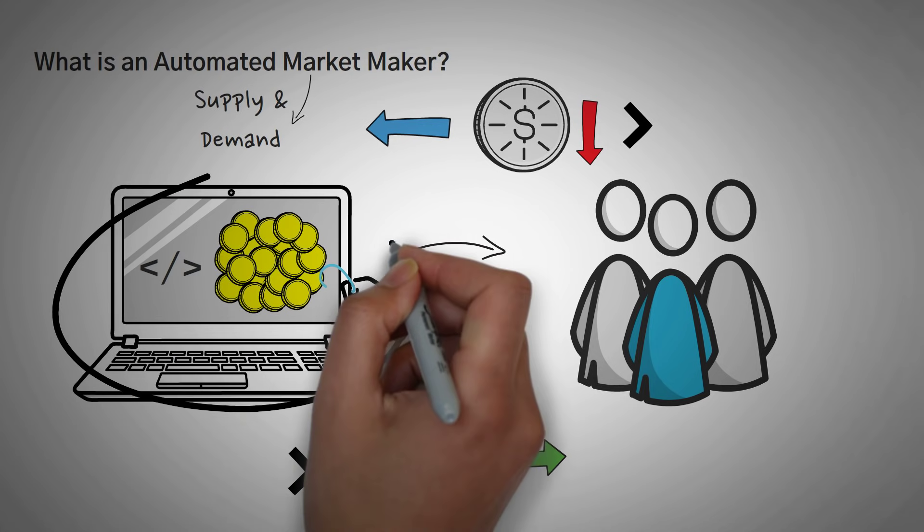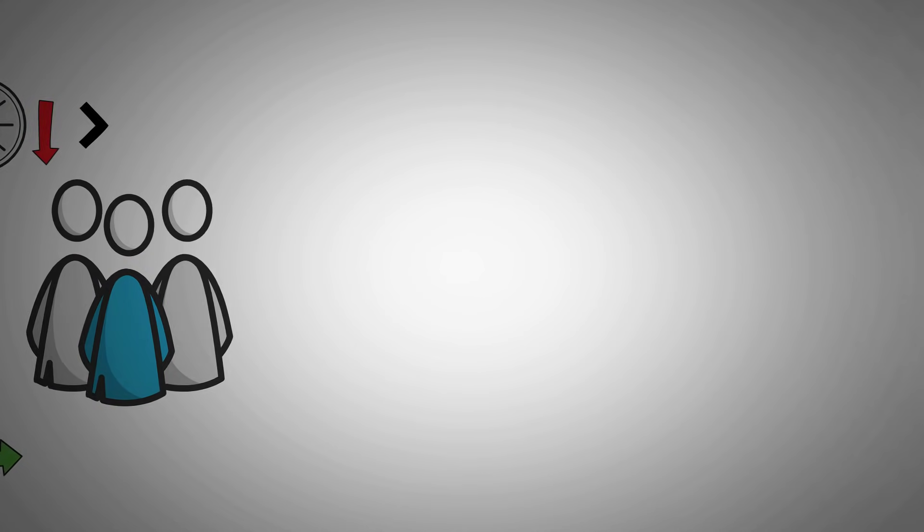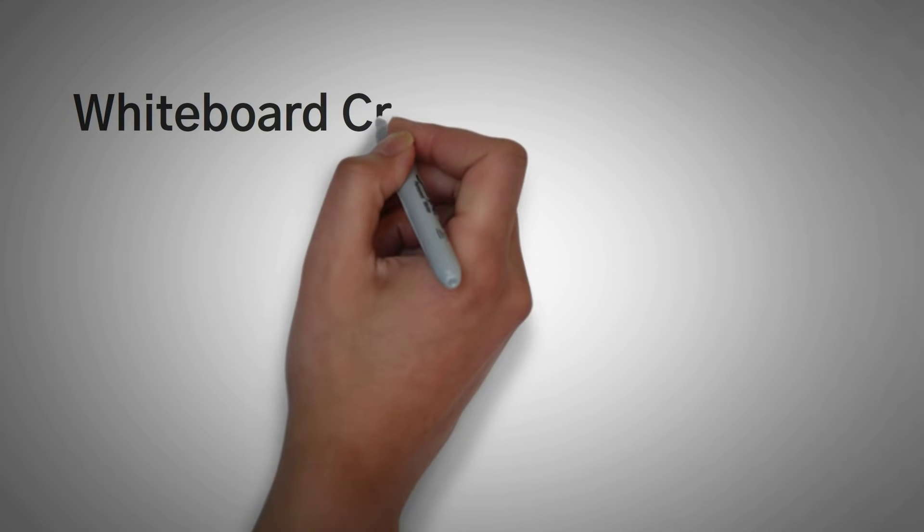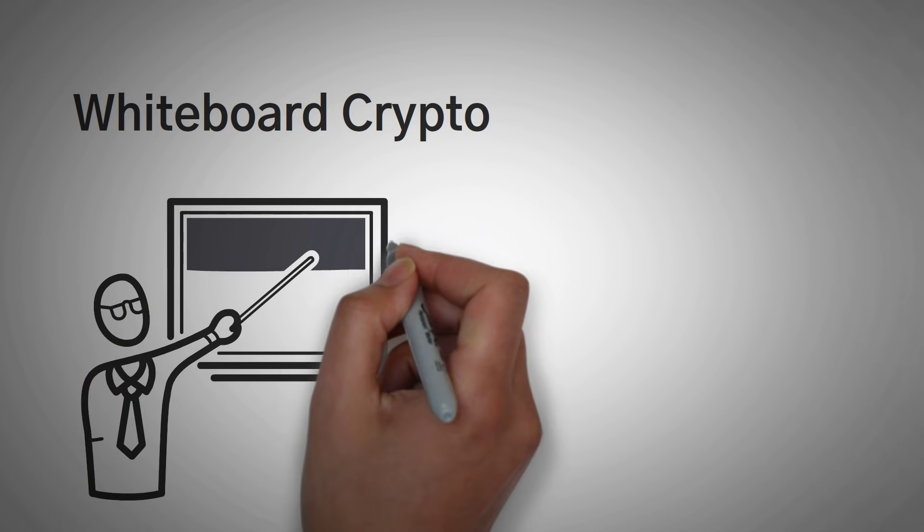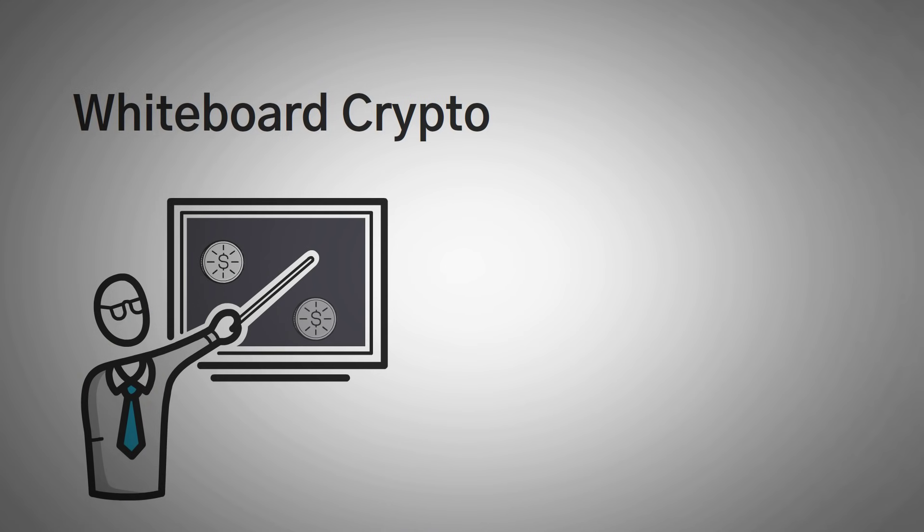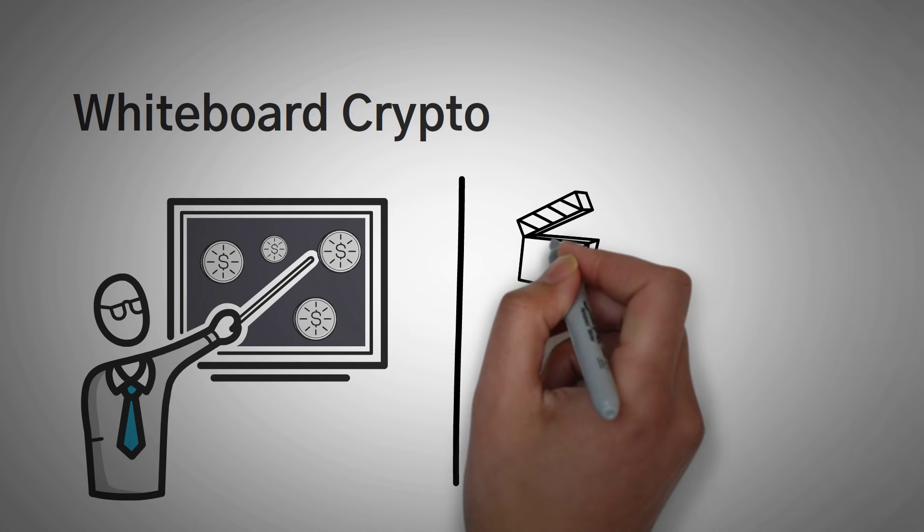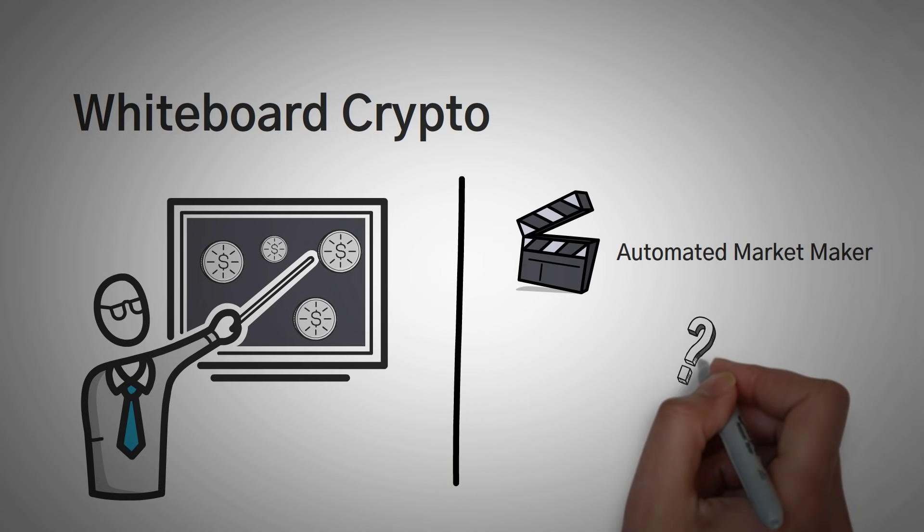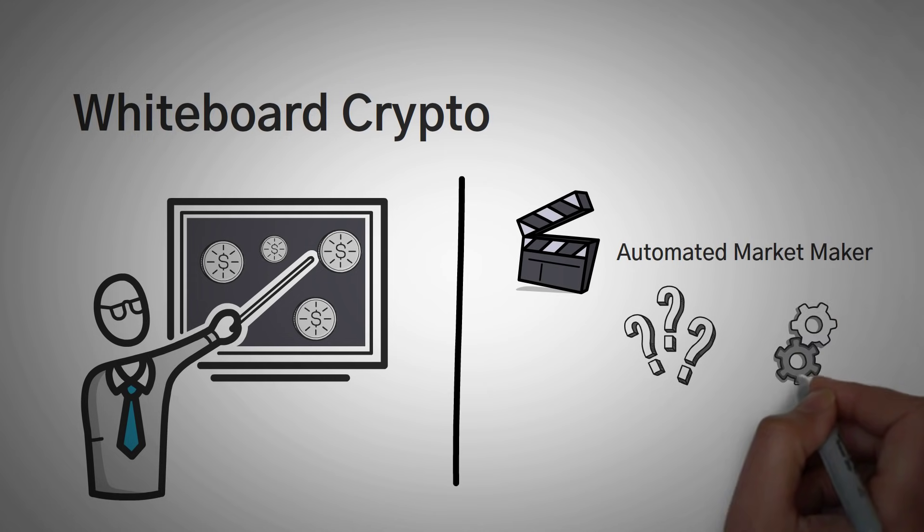But it's using an algorithm instead of the traditional method which uses a person. Welcome to Whiteboard Crypto, where we explain cryptocurrency topics using analogies, stories, and examples so that you can actually understand them. And in this video we're going to cover what an automated market maker is and exactly how it works. Let's dig in.